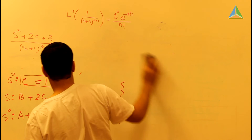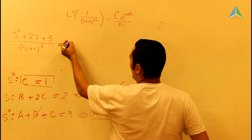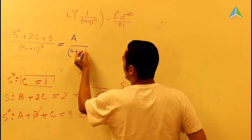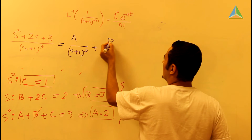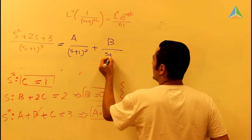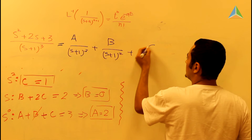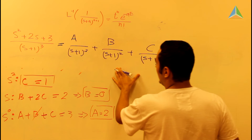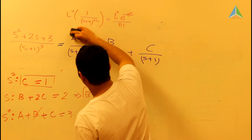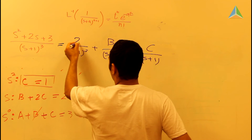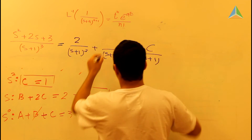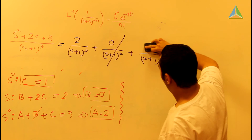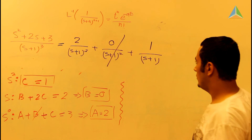After determining A, B, and C, we know that A equals 2 divided by (s+1)³, B equals 0 divided by (s+1)², and C equals 1 divided by (s+1). We take A out and put 2, we take B out and put 0 — this term goes away — and we take C out and put 1.